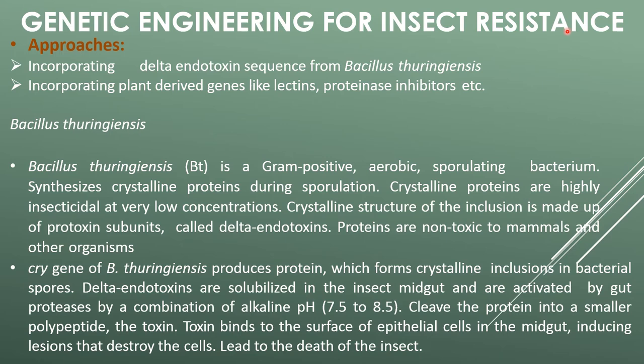Genetic engineering for insect resistance uses two approaches: one is incorporating the delta endotoxin sequence from Bacillus thuringiensis, and the second is incorporating plant-derived genes like lectins and proteinase inhibitors. Bacillus thuringiensis is a gram-positive, aerobic, sporulating bacteria that synthesizes crystalline proteins during sporulation. These crystalline proteins are highly insecticidal at very low concentrations.